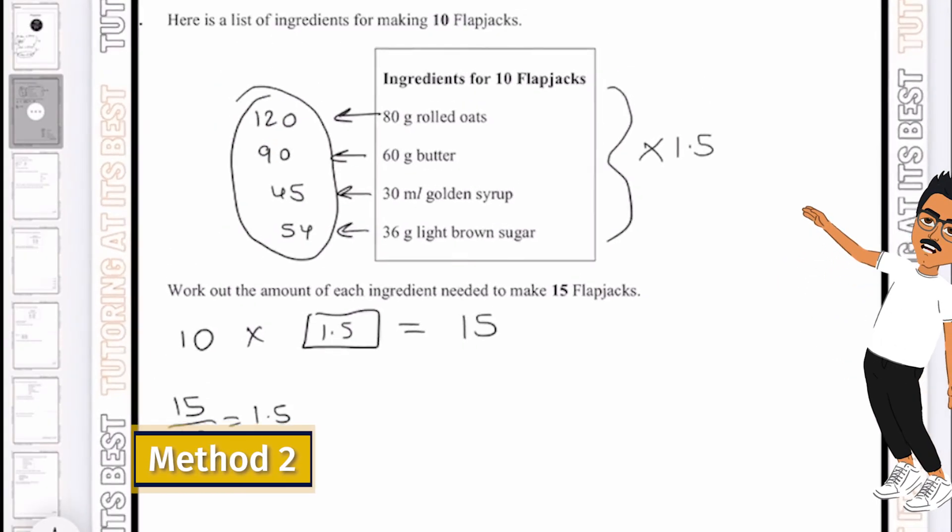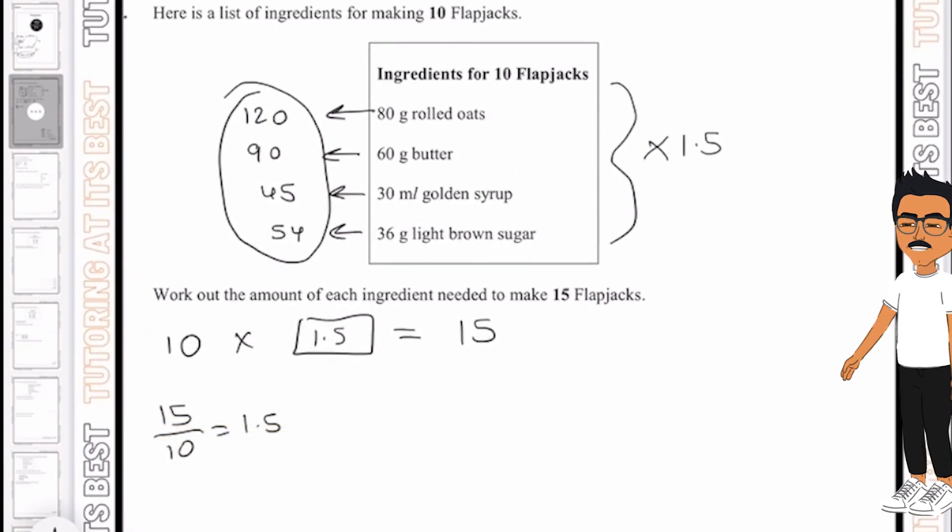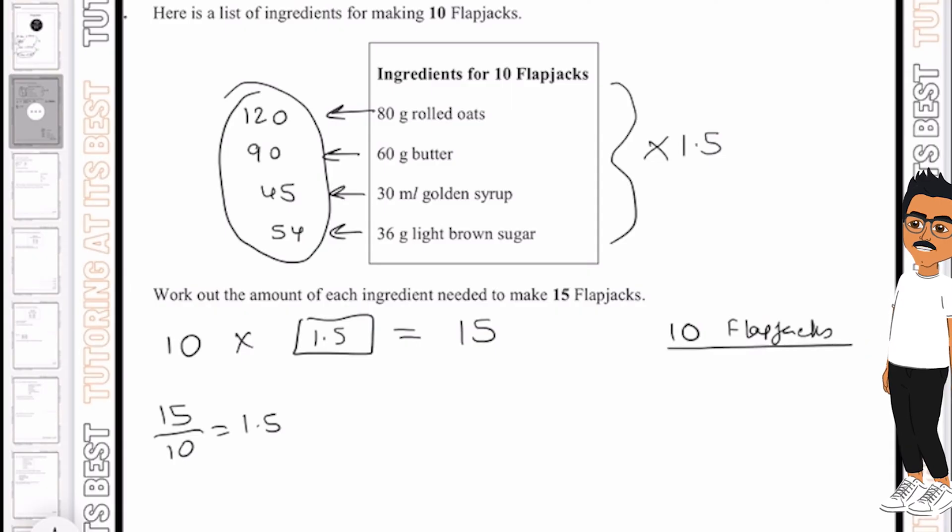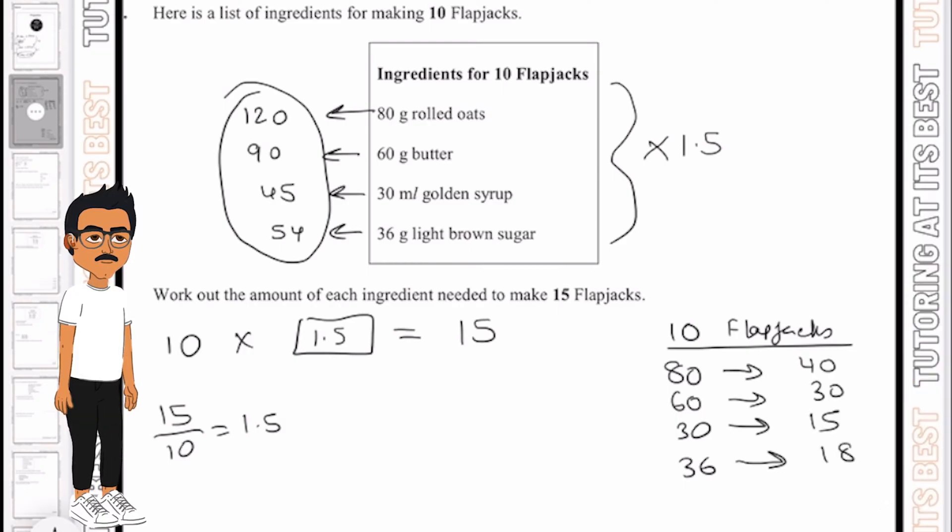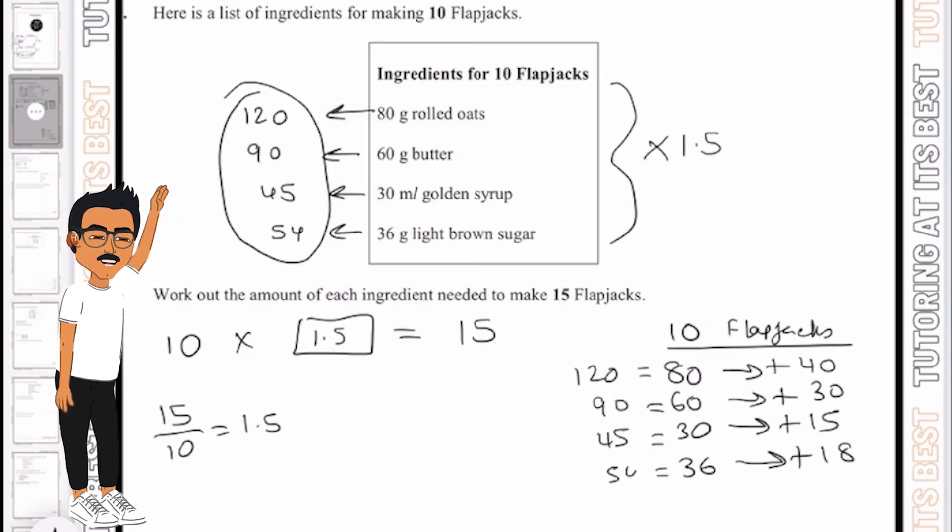Now let's take a look at method 2 here. So I'd get my ingredients for 10 flapjacks: 80, 60, 30 and 36. I would then divide this by 2. Now remember by dividing this by 2 this would give me the value of 5 flapjacks. And then I would add them together. And that again would give me the same answer which is 120, 90, 45 and 54.